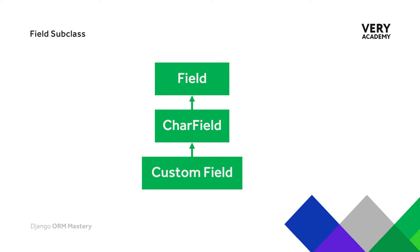By taking this approach, we have all the functionality provided by the character field — or whichever field type we choose — and then within our class we can build some customizations. We might choose to override settings from the existing class we're inheriting from, or add some attributes and behaviors to fully create a custom field that meets the needs of our data. One of the key benefits is that a lot is already created for us, so we don't have to reinvent the wheel.